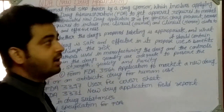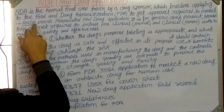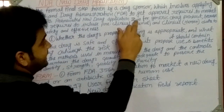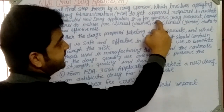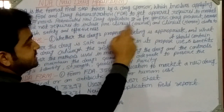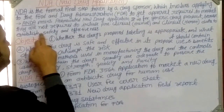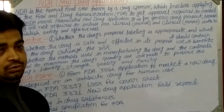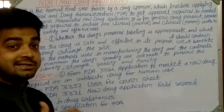Another important term is ANDA — Abbreviated New Drug Application. ANDA is for generic drug products, not for the original drug product. Generic drug applications are called 'abbreviated' because they are not required to include preclinical (animal) and clinical (human) study data to establish safety and effectiveness. Patent-expired drugs going to market fall under the abbreviated new drug application.